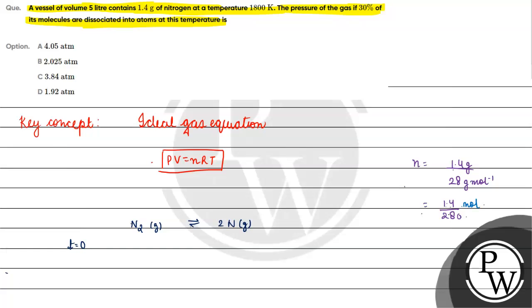Solving this, we get 1.4 divided by 28, which simplifies to 1/20, or 0.05 moles. So initially we have 0.05 moles of nitrogen gas.